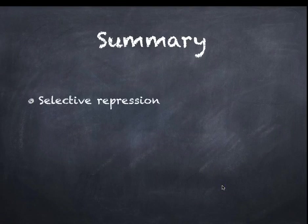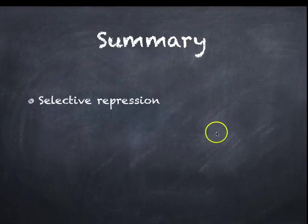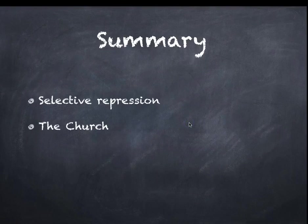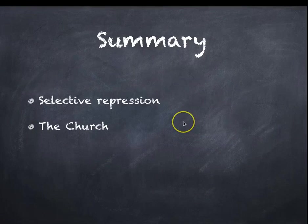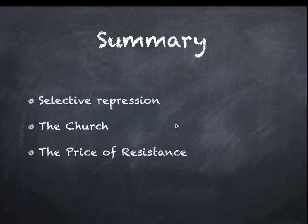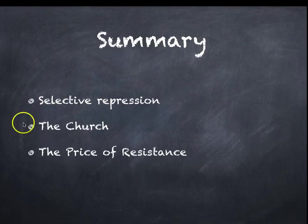In summary, selective repression: certain groups such as the industrial elite and rich bankers were not repressed, as they were valuable to Hitler. The Catholic Church initially signed an agreement with Hitler under the Concordat, but the Nazis broke that agreement and more and more priests and pastors were imprisoned. Although the Nazis never closed the churches — that would have been too risky and would have created too much resistance.